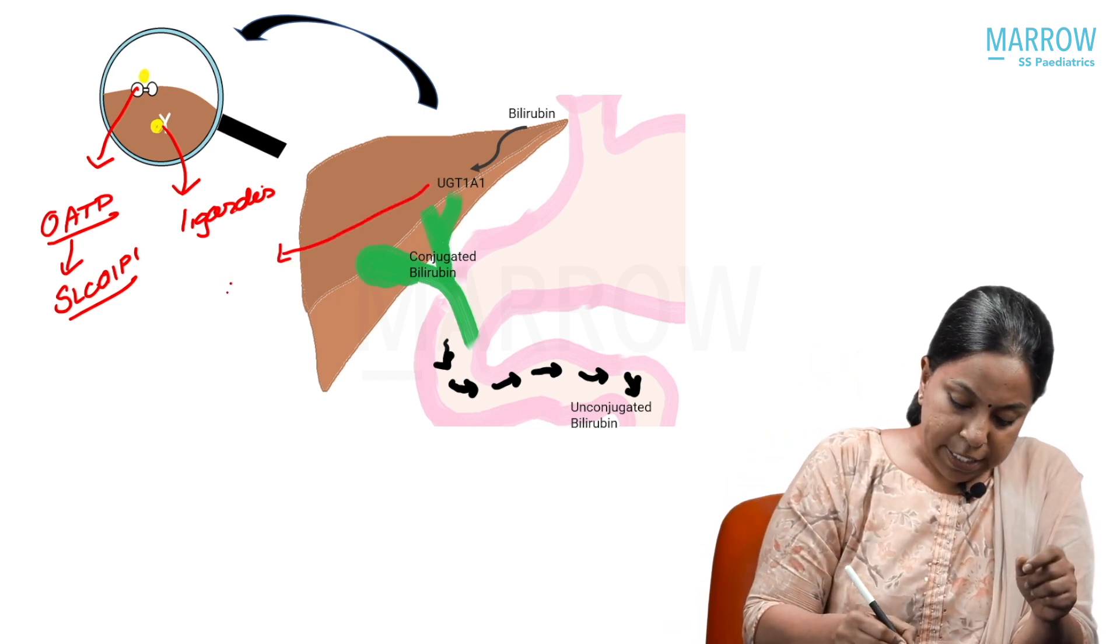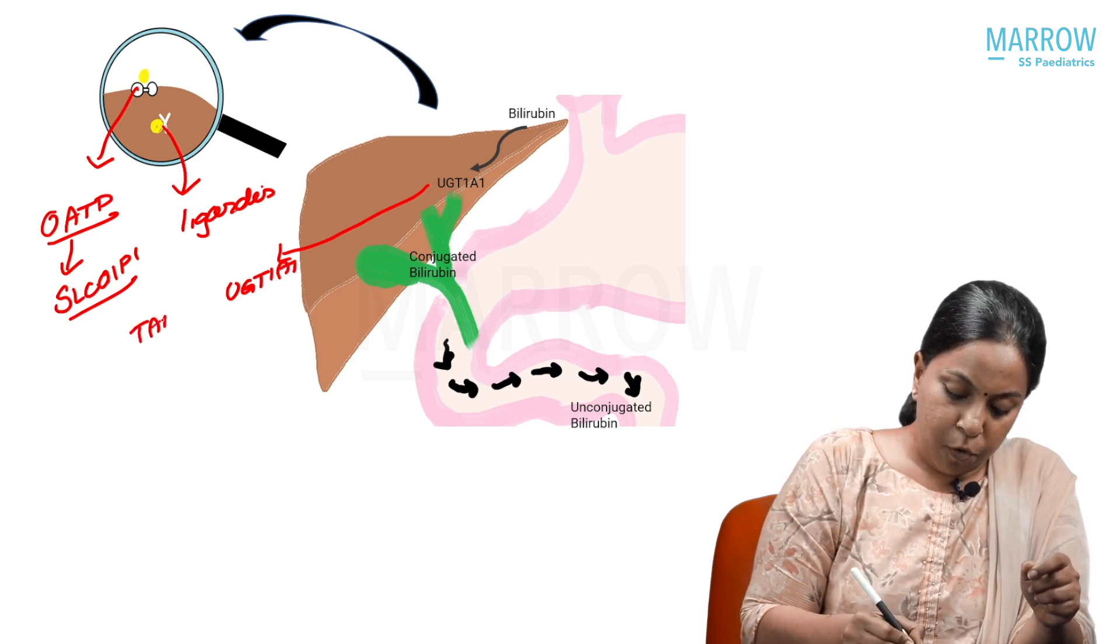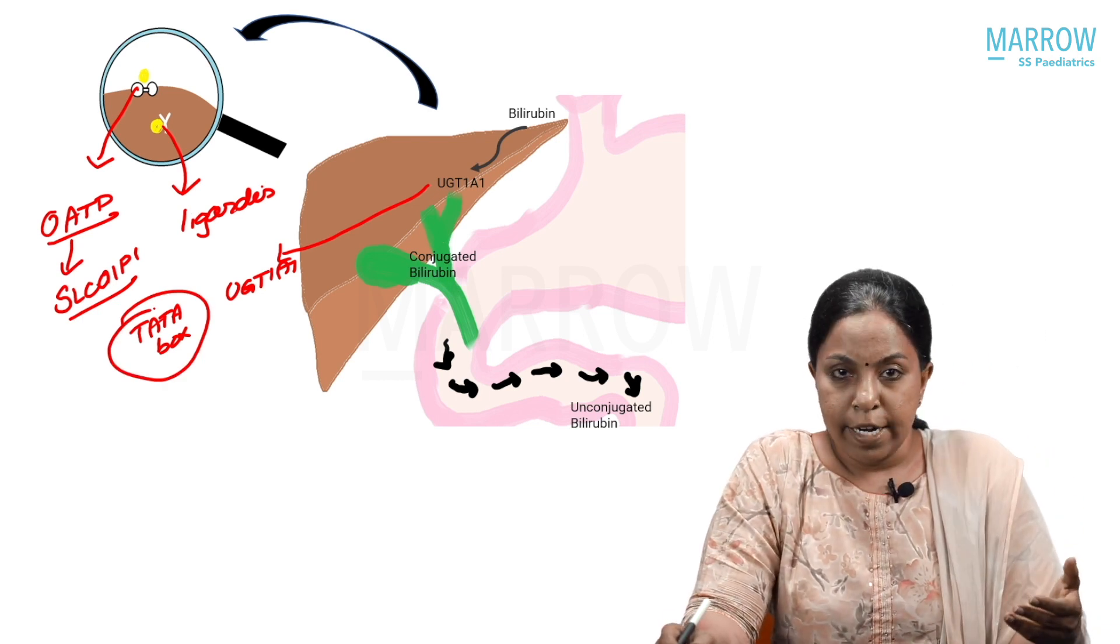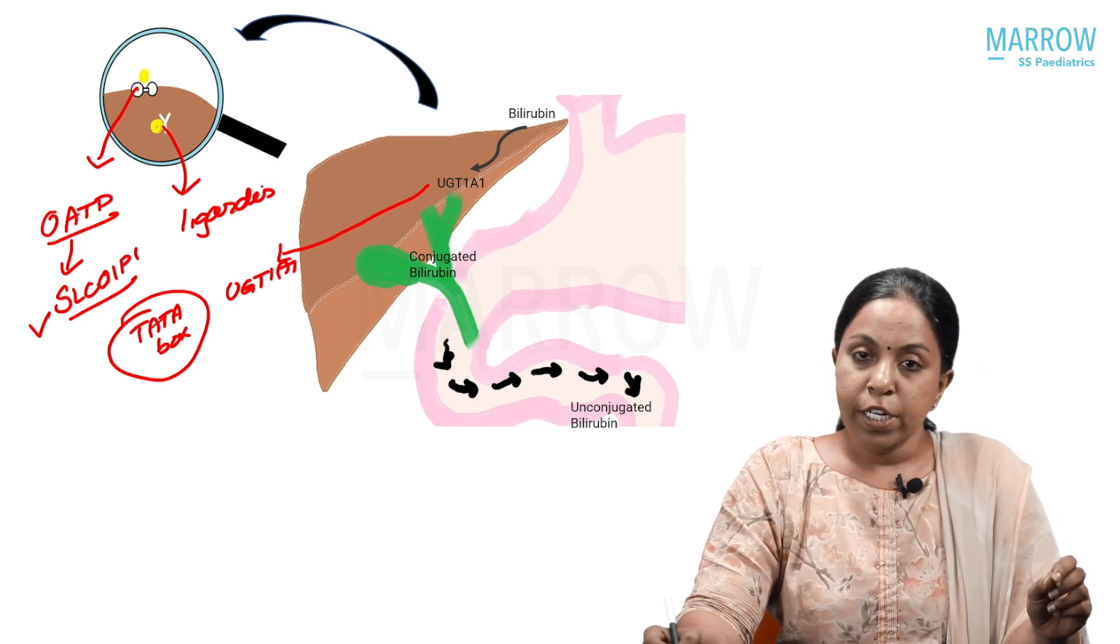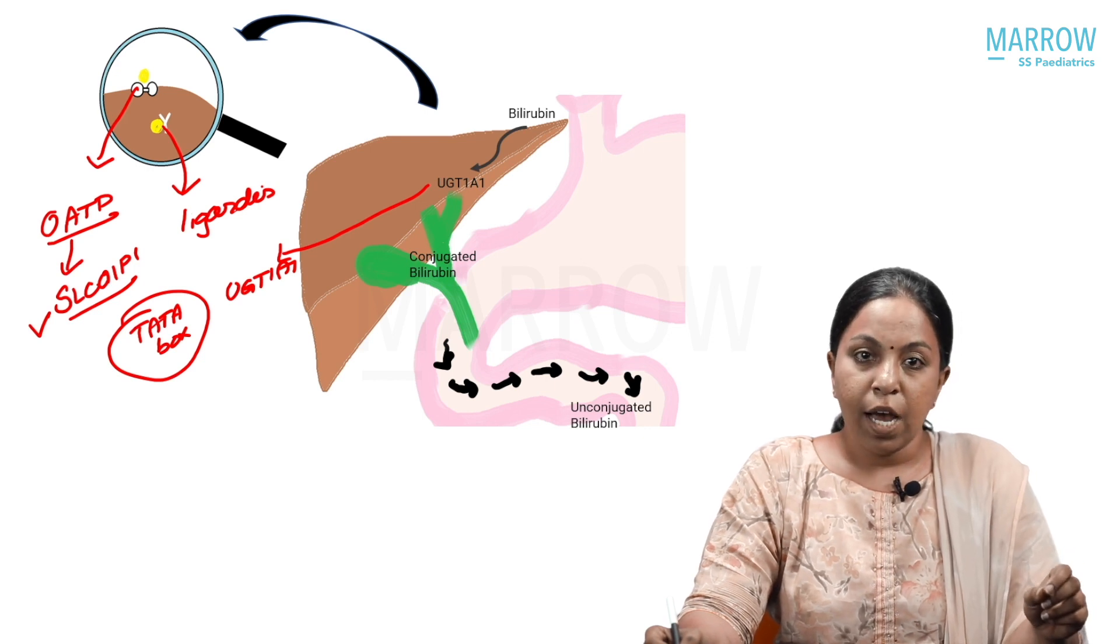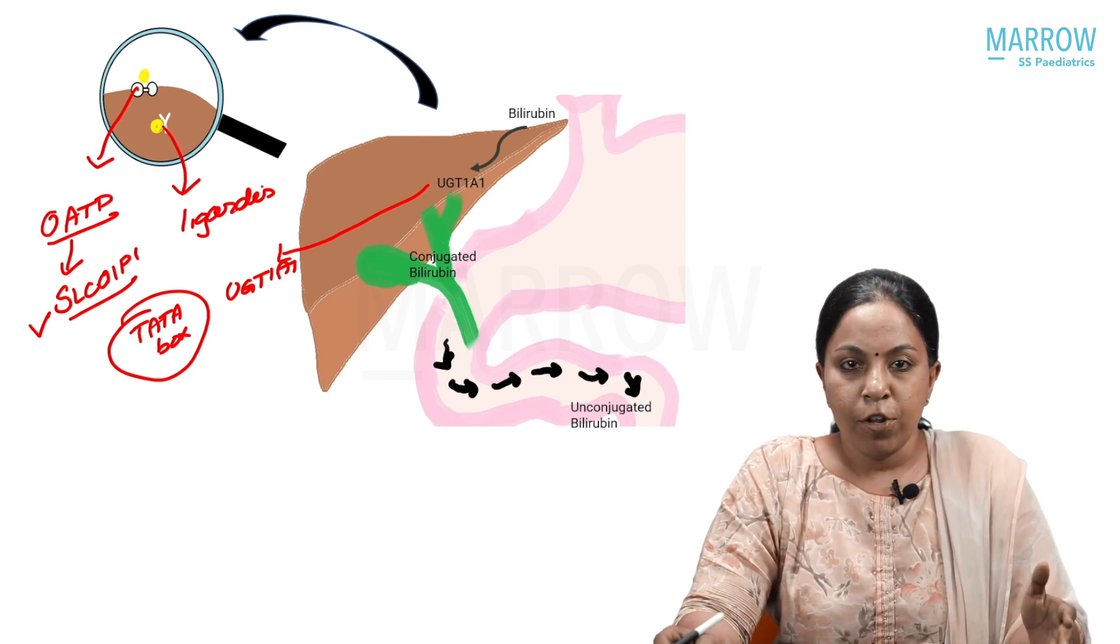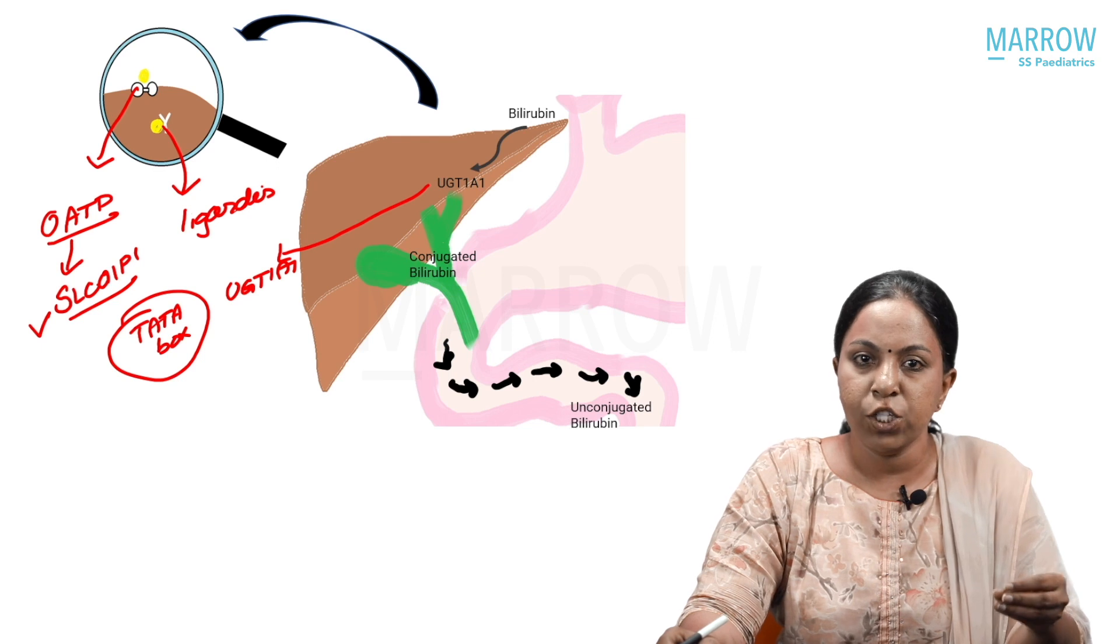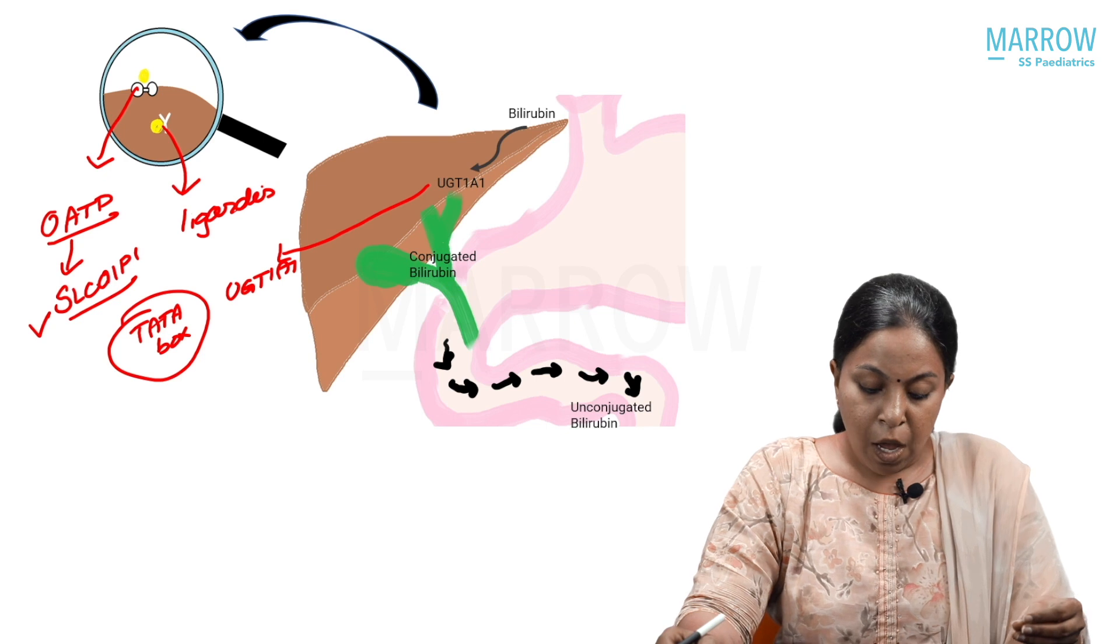This UGT1A1 enzyme has a promoter region which is composed of a TATA box. Why am I mentioning all these in detail? Because the polymorphism in SLCO1B1 genes, UGT1A1 genes, and the TATA box mutations are the ones which contribute to the ethnic variations in the incidence of neonatal jaundice. This is again a question that has been asked: which genetic polymorphism causes an increased risk of hyperbilirubinemia.